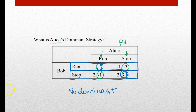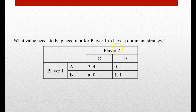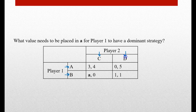So no dominant strategy for Alice. Now we have one more example: what value needs to be placed in 'a' for player one to have a dominant strategy? We have a general game matrix and we're missing a number to plug in for lowercase 'a'. Player one has either the strategy of A or the strategy of B — kind of like the run or stay option.